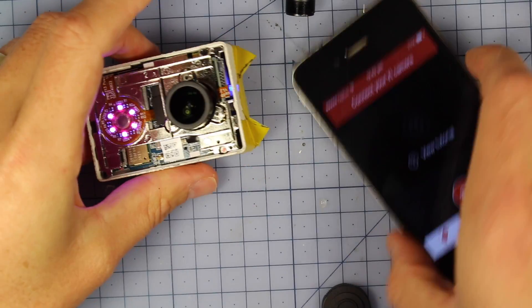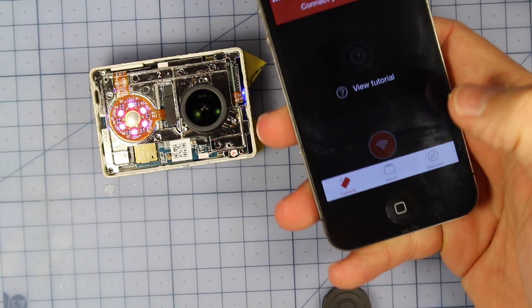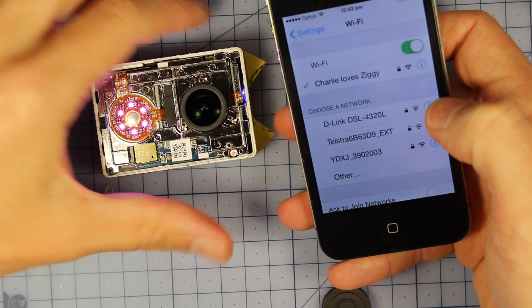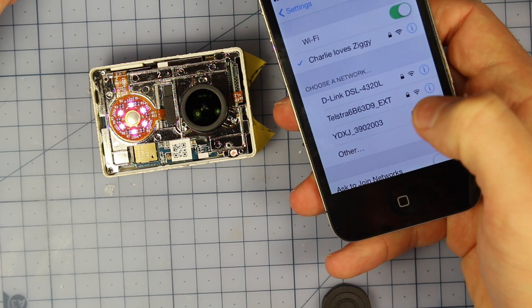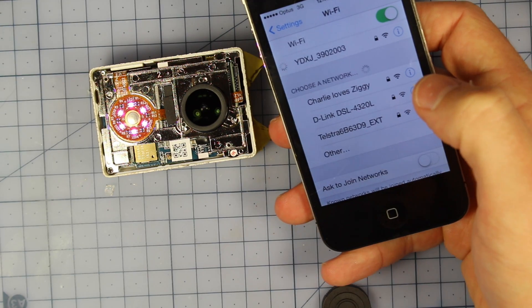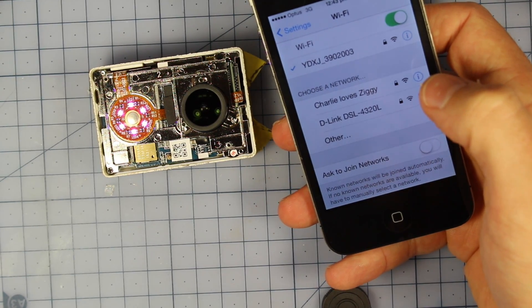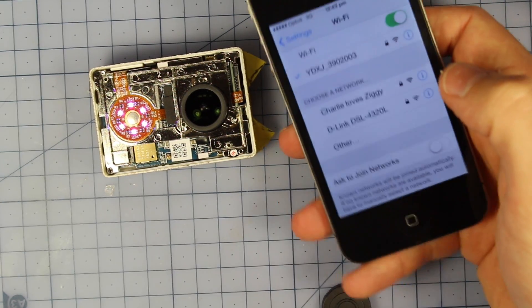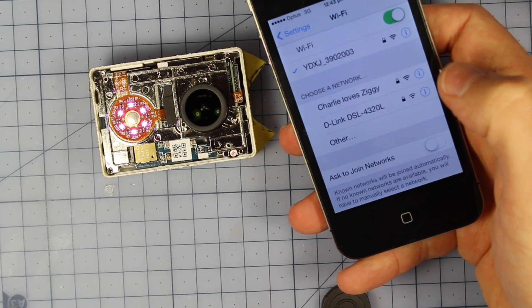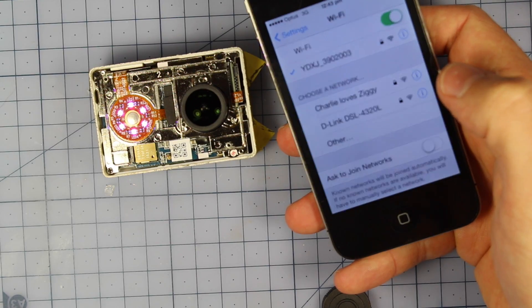Then we can connect our Yomi-G. Here we go. It's this one down the bottom, this YDXJ blah blah blah. We'll ask to join that. And the default password, I think, oh I must have remembered it, but I think the default password is 0123456789 or it's 1234567890.